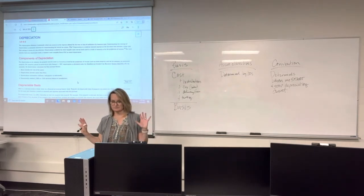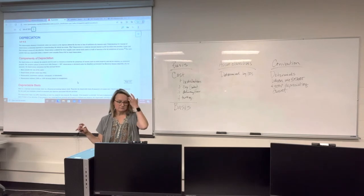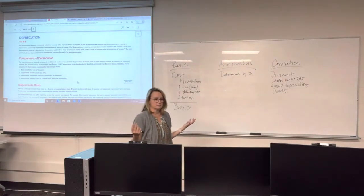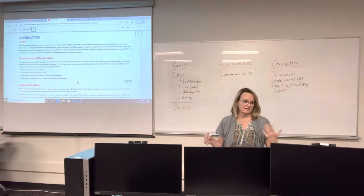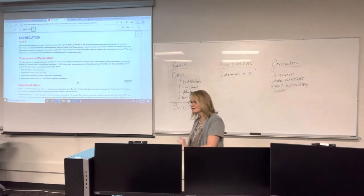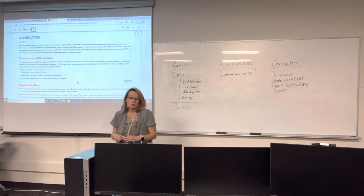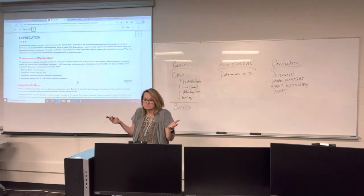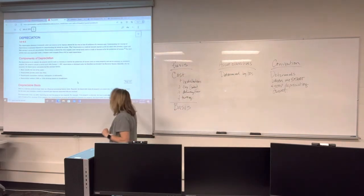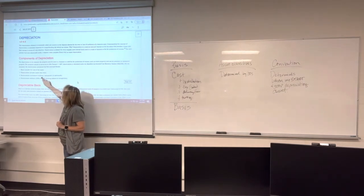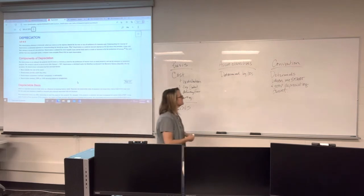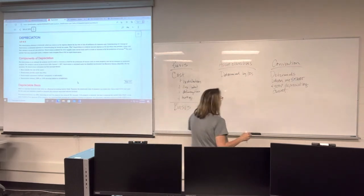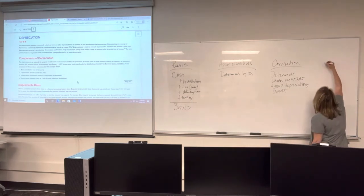This is unusual — there's nothing like this in financial accounting. In financial accounting, we start depreciating when we start using it. For tax purposes we have three choices: July 1st (half-year), mid-quarter depending on the quarter, or mid-month. Those are our conventions. The last component is our depreciation method — again, the IRS tells us what we can use. You can always use straight-line if you choose to.